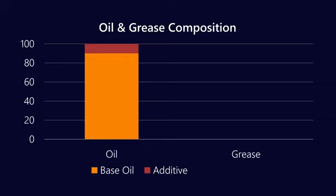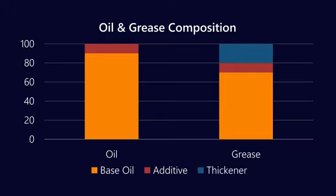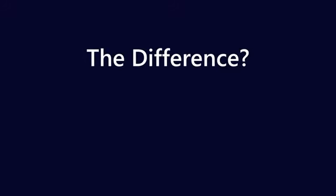With greases, we've got base oil in a much lower proportion — in the ballpark of about 70%. Then you've got additives making up about 10% of the formulation, and what's different is that about 20% of the volume is taken up by what is called thickener. So if we were to answer the question — what's the difference between oil and grease? It's the thickener.